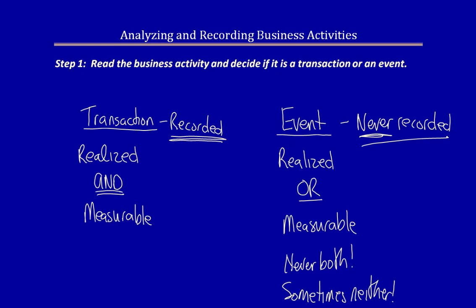Let's do a different example. A business provides consulting services. The business has provided services to the client and bills them — sends them an invoice for $220. The client promises to pay the invoice next week. Event or transaction? It's a transaction. The business did their job, provided the services, so there has been an exchange. Even though the client did not pay, they have promised to pay in the future — accounts receivable — and the amount is known, so it is measurable. The requirements have been met, and the business must record this transaction into the accounting system.